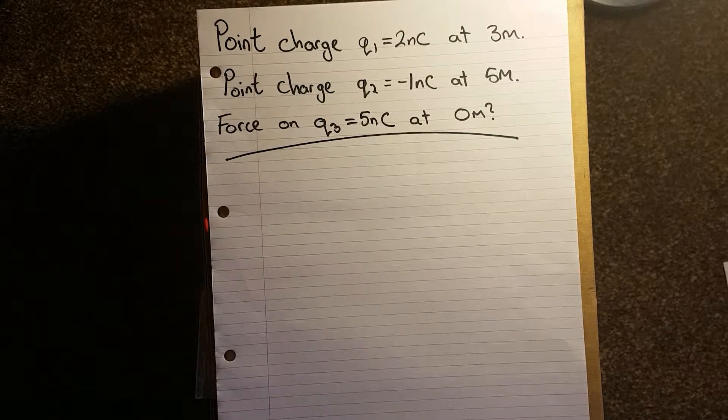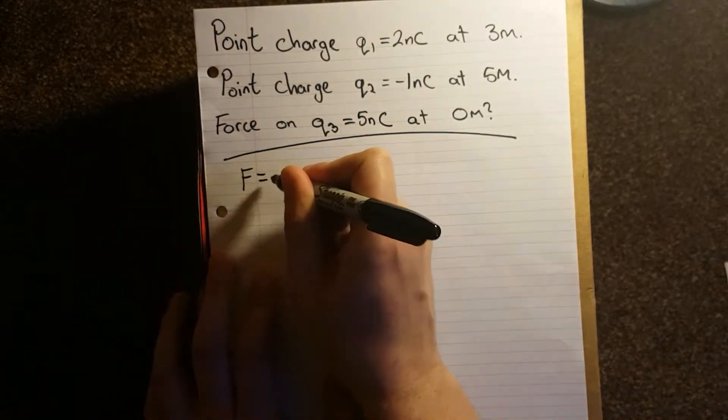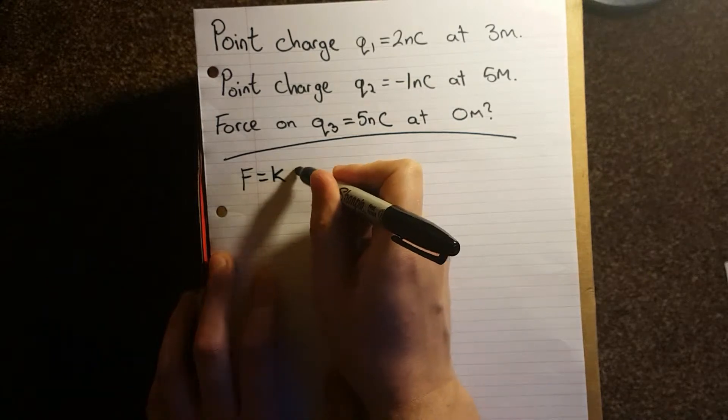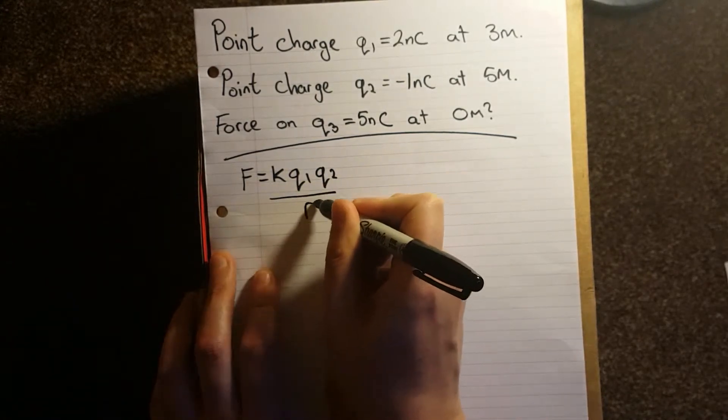For this, we're going to need Coulomb's law, which is F equals K, which is Coulomb's constant, Q1, Q2 over R squared.